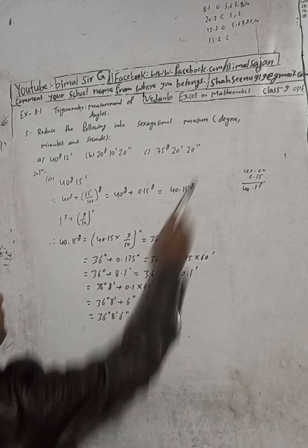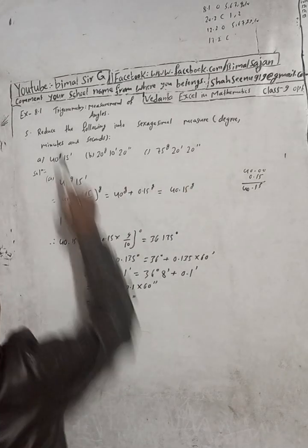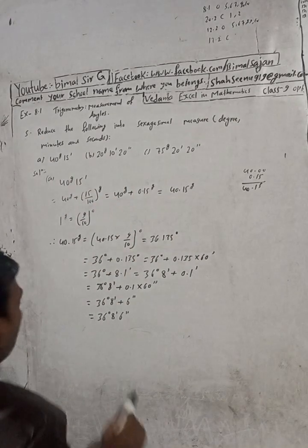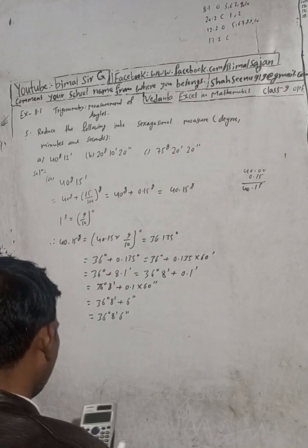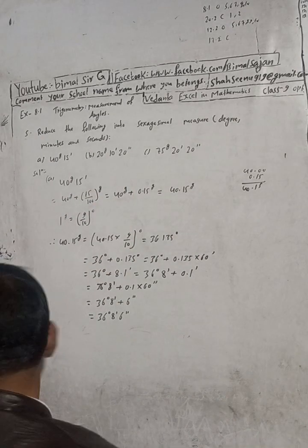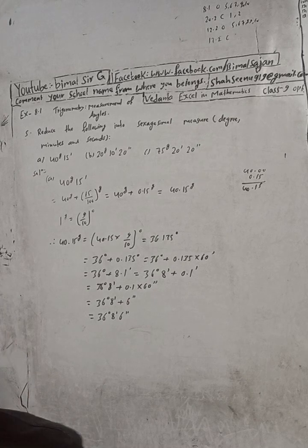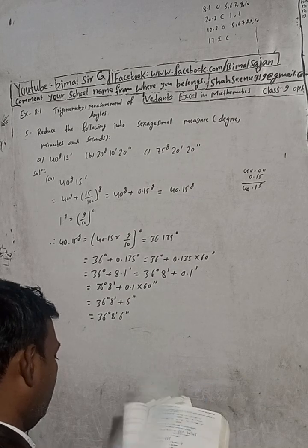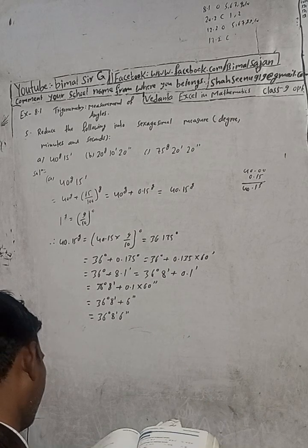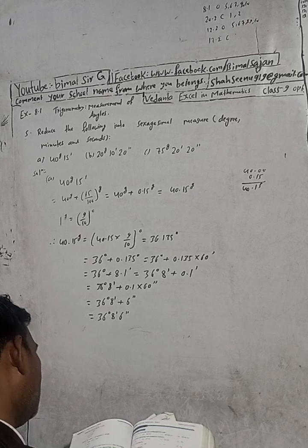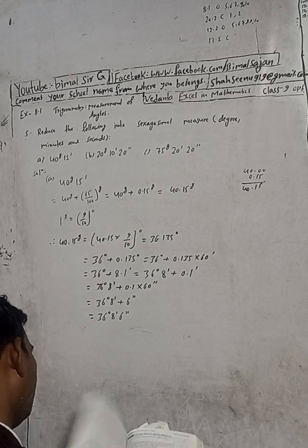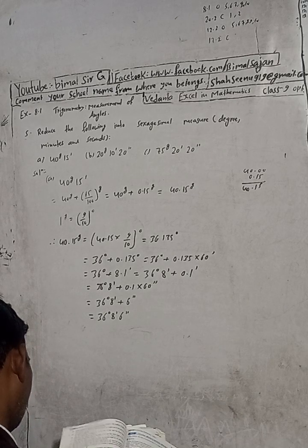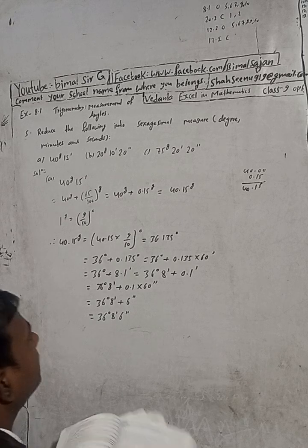So the required answer is 36 degrees, 8 minutes, 6 seconds. Degree, minute, second — that is the answer. 36 degrees 8 minutes 6 seconds.